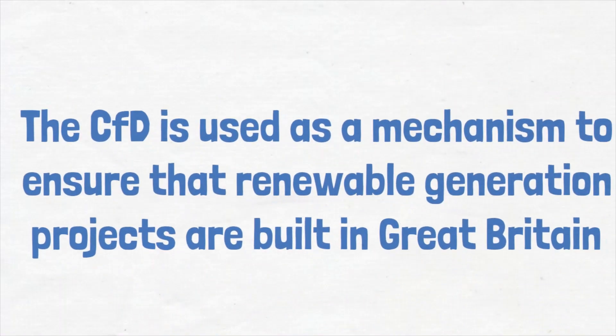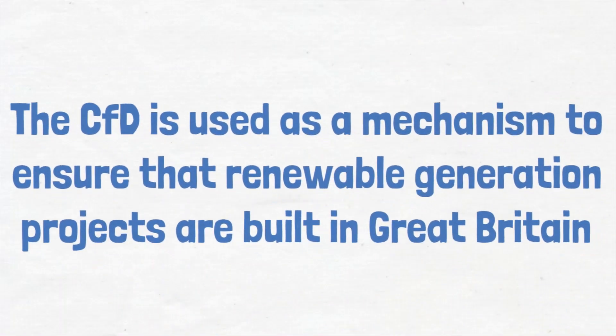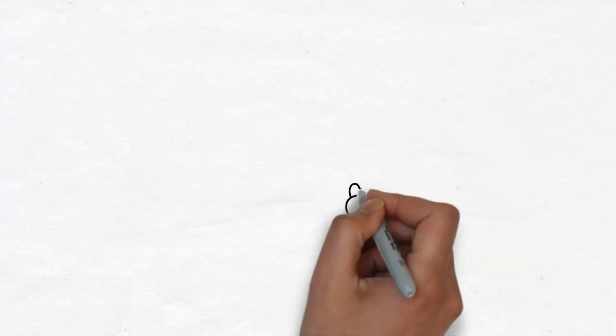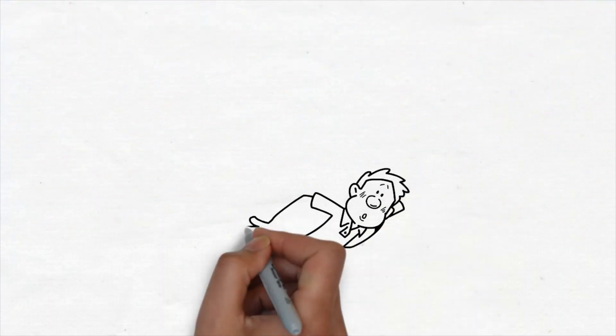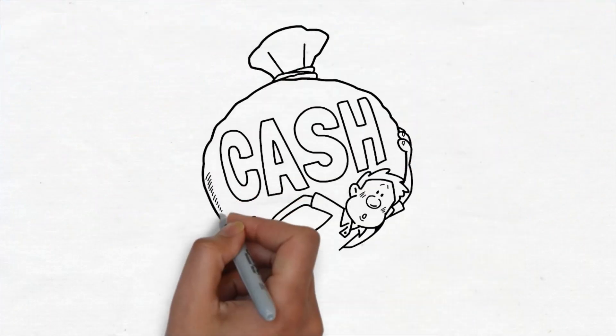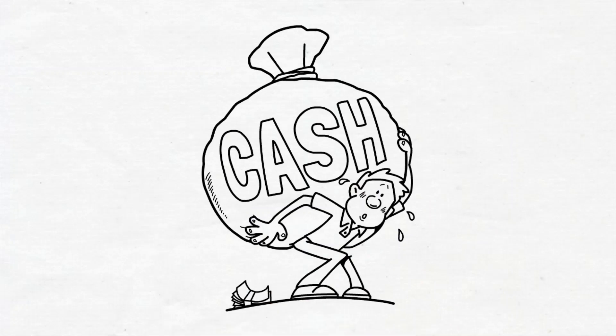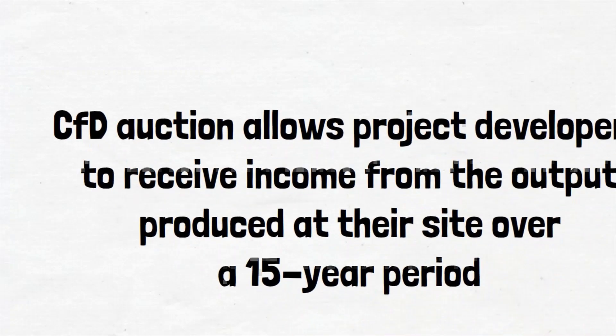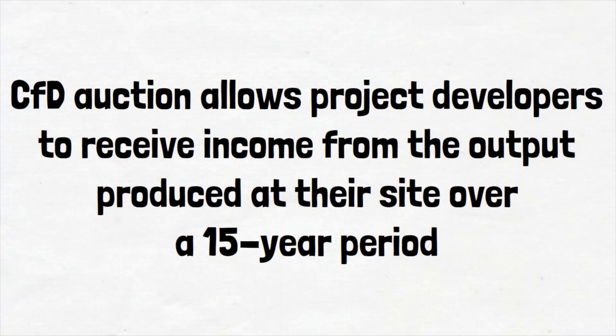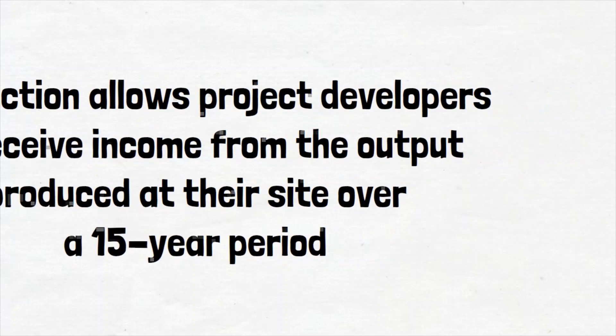The CFD is used as a mechanism to ensure that renewable generation projects are built in Great Britain. The costs of developing and building these types of large-scale projects are high. Using the CFD auction allows project developers to receive income from the output produced at their site over a 15-year period.